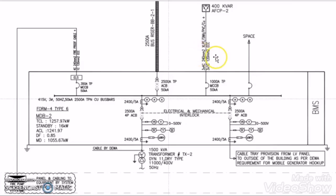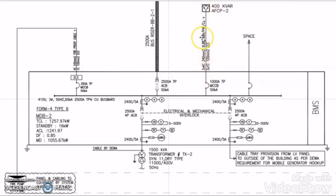So from this SLD we can say that the breaker rating for this capacitor bank is 1000A as calculated, the cable size is 3 runs of 4-core 240 sq mm XLPE cable, and the earth cable will be half of it — 3 runs of 1-core 120 sq mm ECC cable.